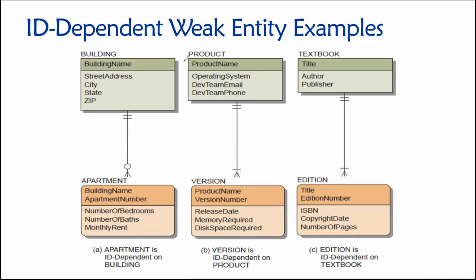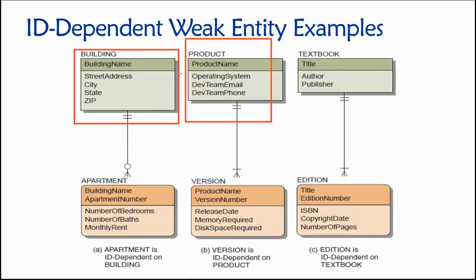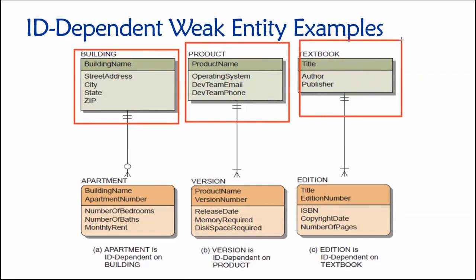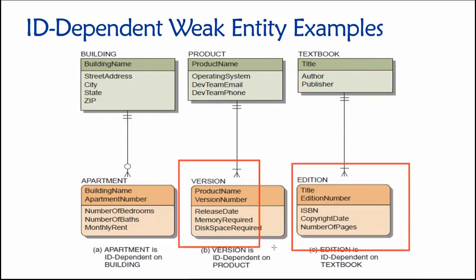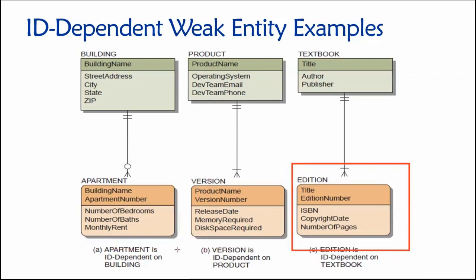So weak entities have rounded corners — like a rounded rectangle — whereas strong entities have sharp corners. We have these subtle differences in the entity rectangles that visually tell us whether or not this is a strong or weak entity. So the building entity is strong, the product entity is strong, and the textbook entity is strong, whereas the entities down here are all weak.